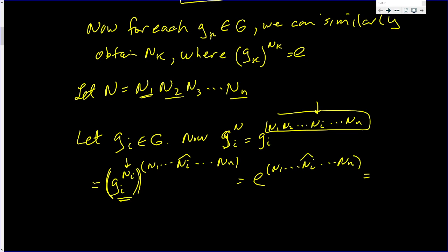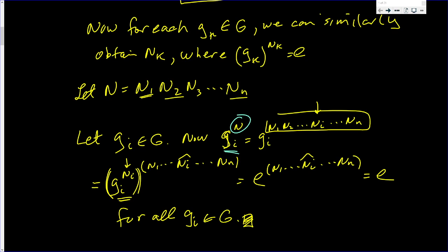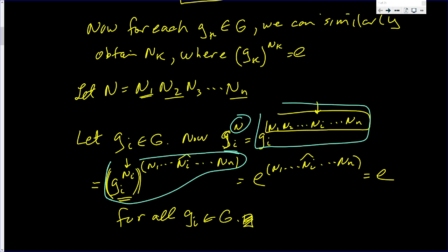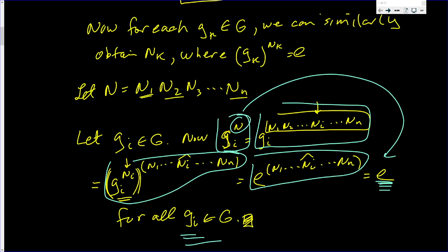E to any integer is E. This is true for all G_i in the group. That is, any G_i raised to the Nth power equals E. That's true for all elements in the group G. So here, you can find the special number N. Now, there's no reason why I can't multiply N by 7 — N is not unique, but it exists. We just came up with one. That completes the proof of this theorem.